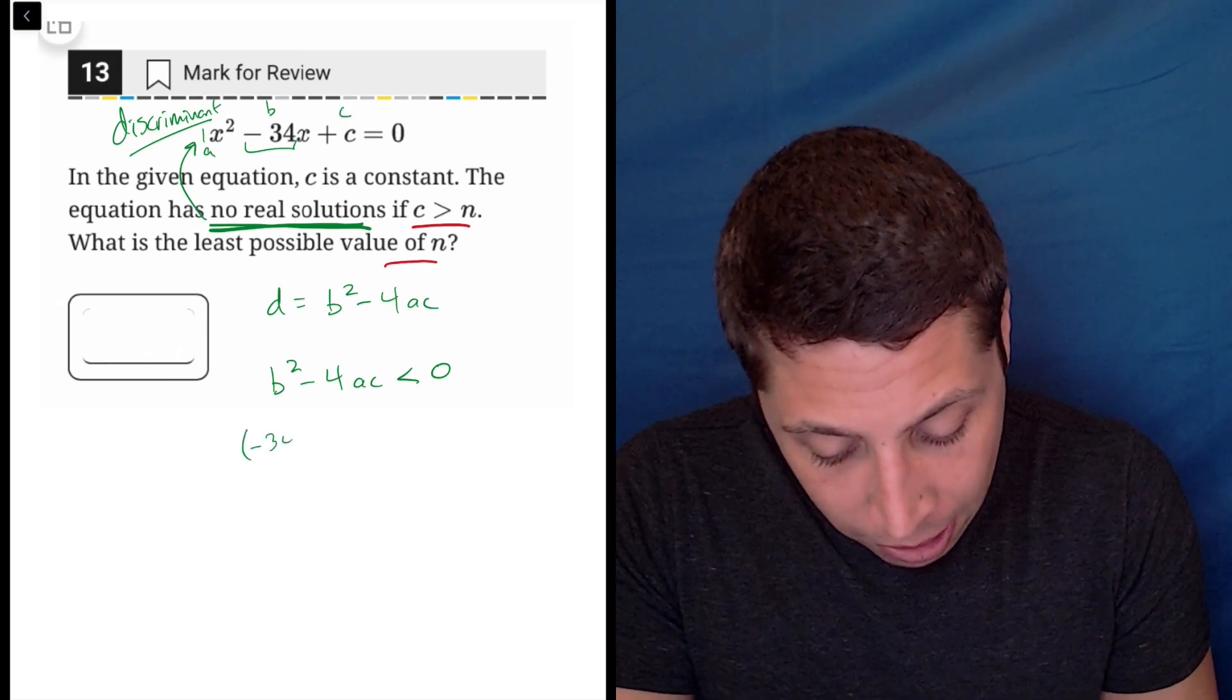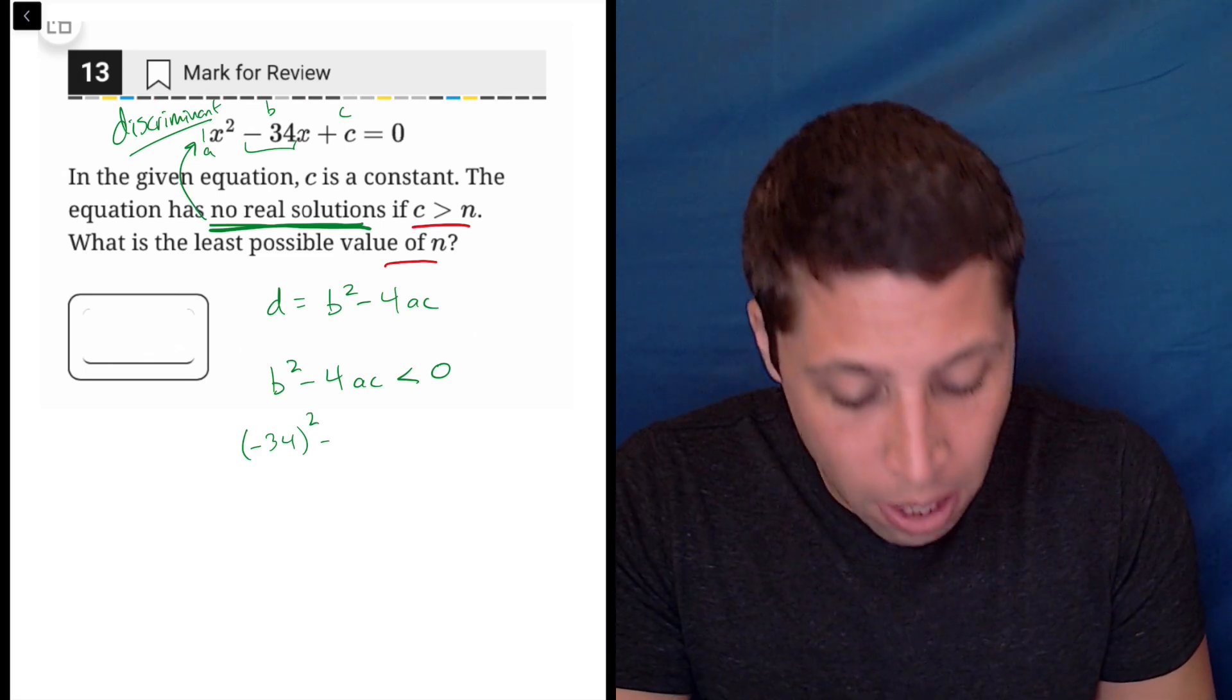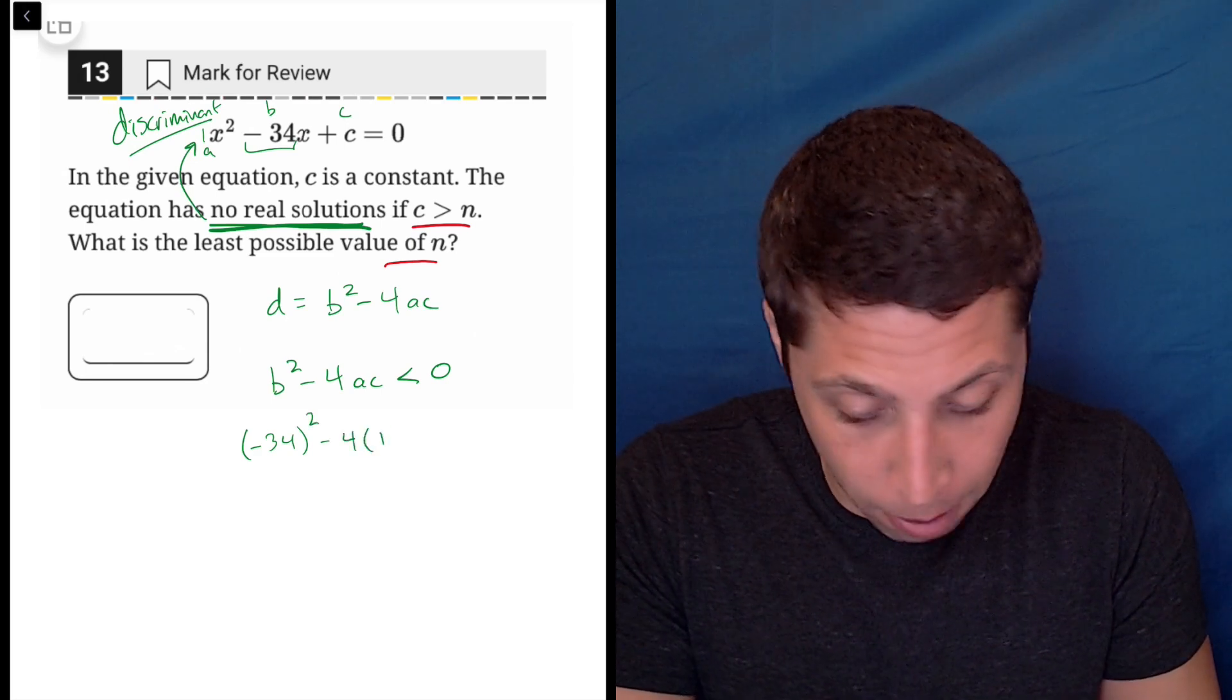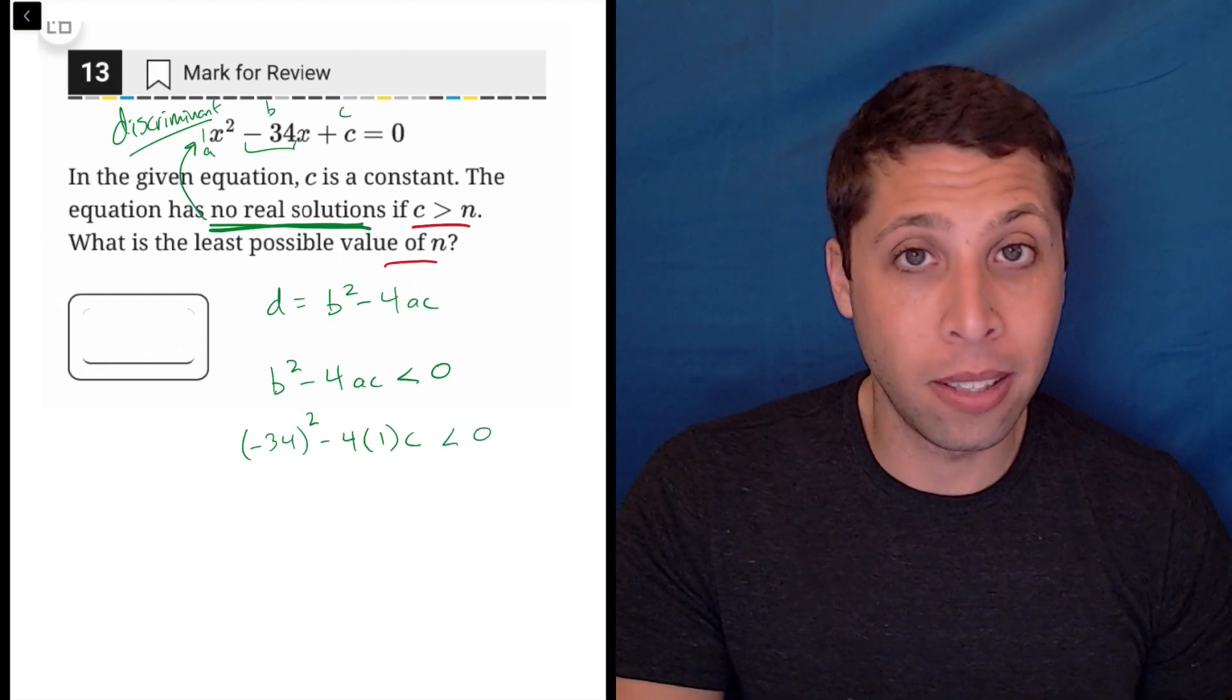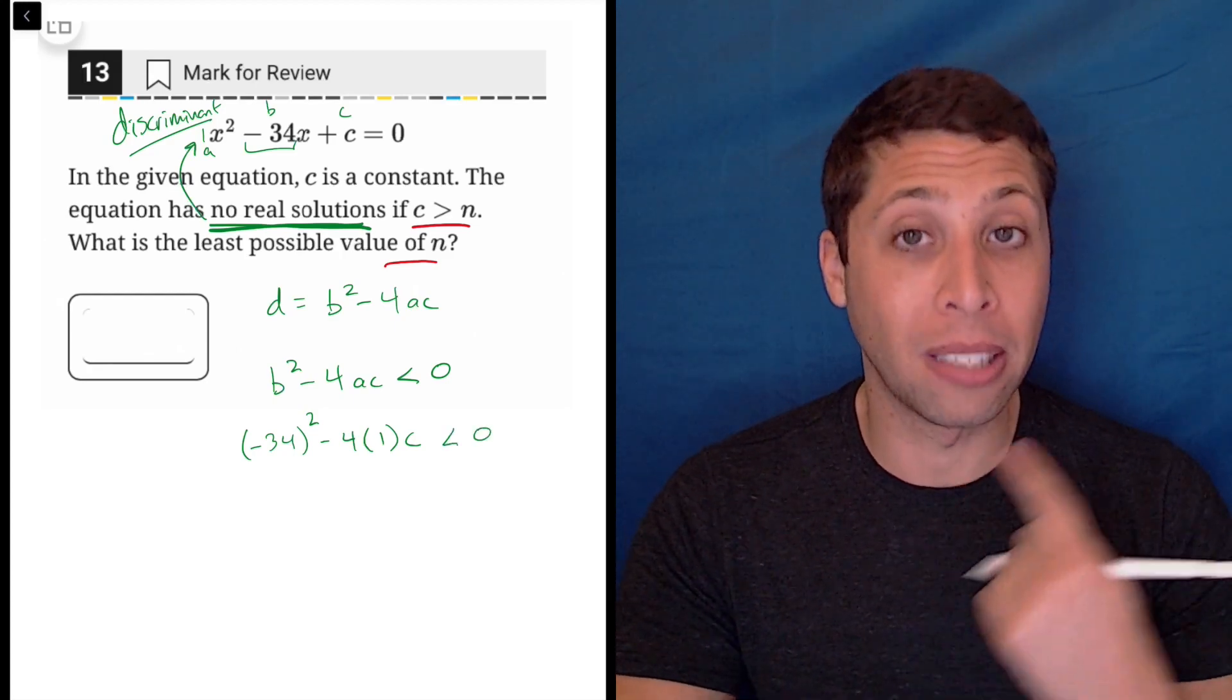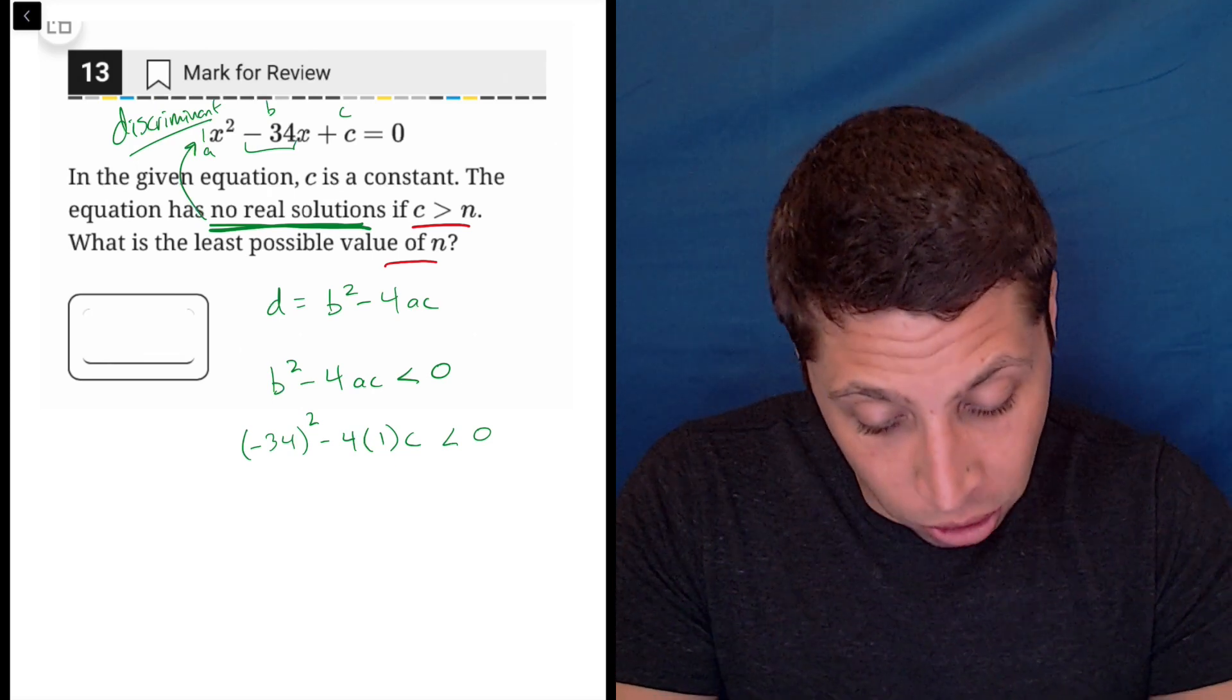So b squared, that would be negative 34 squared minus 4 times a is 1, c is unknown, and that's less than zero. So you can probably see now we only have one variable we're going to be able to solve for c. So let's just go ahead and do that.